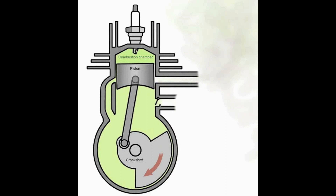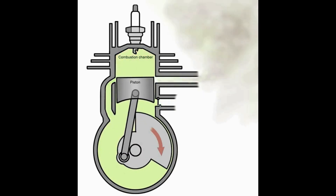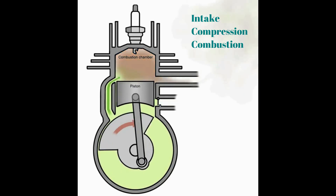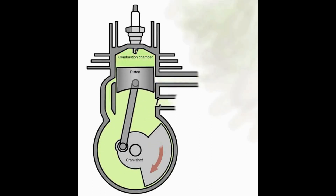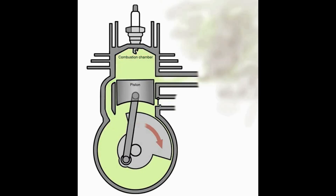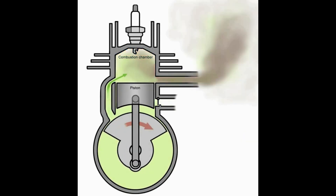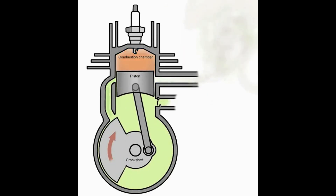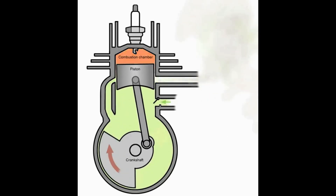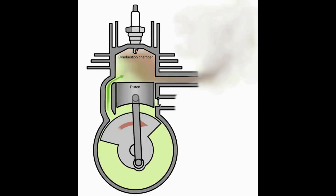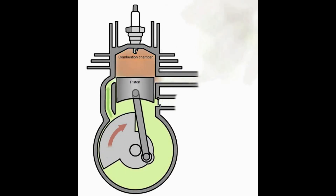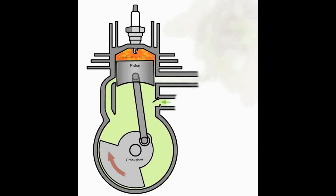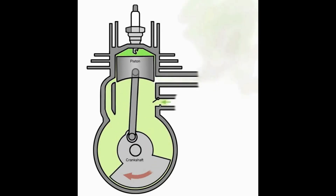Let's take a closer look at the individual strokes. On the first stroke we have intake, compression and combustion. On the intake, the piston moves downward from TDC to BDC to let the fresh air-fuel mixture enter the combustion chamber. Then the piston is pushed up from BDC to TDC to compress the fresh air-fuel mixture, and the spark plug ignites the mixture, creating combustion.